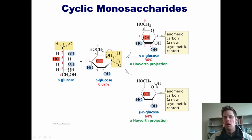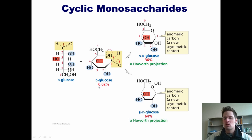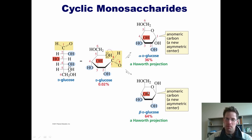So when I say that glucose exists in equilibrium between its ring structure and its open chain form, what I actually should be saying is that it exists in equilibrium between its two different ring structures and its open chain form. The open chain form of glucose in equilibrium exists at about 0.02%. The form of glucose with the OH pointing down exists at about 36% in equilibrium, and the one with the OH pointing up exists at about 64% in equilibrium.